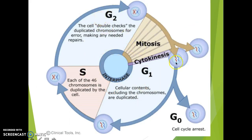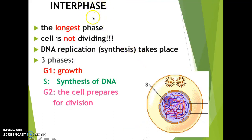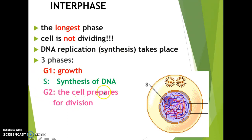A quick review of the entire cell cycle: G1, S phase, and G2 are all during interphase. Interphase is the longest phase of the cell cycle where the cell is doing its everyday job and carrying on with its activities. During the S phase, DNA replication takes place. Then in G2, the cell prepares for division. During interphase, the DNA looks all crumpled up inside the nucleus, making new copies of itself.